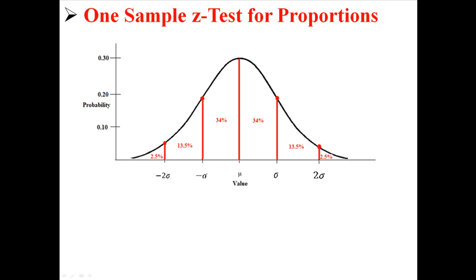First of all, remember the empirical rule. We know what probabilities are associated with the different areas of the graph. Basically, we know that most of the values, about 95% of them, are going to fall within two standard deviations of the mean. Anything outside of that is much more unlikely to happen, and we're going to use that information to make some kind of conclusion with this z-test.